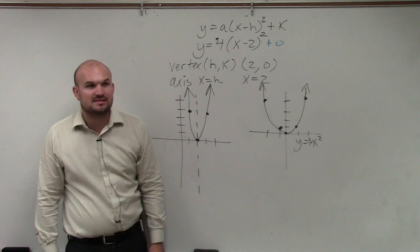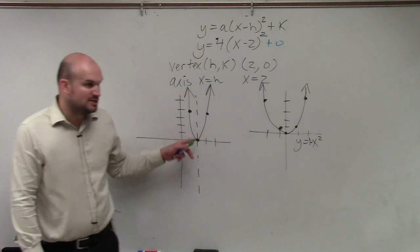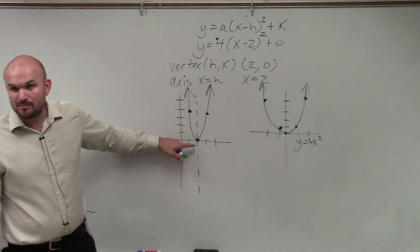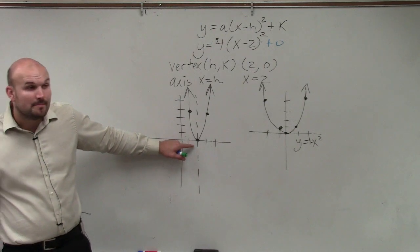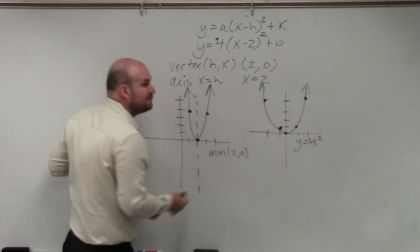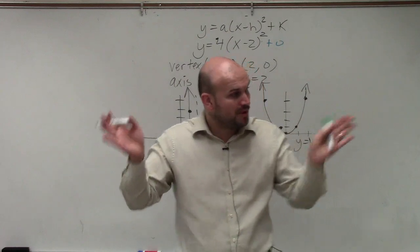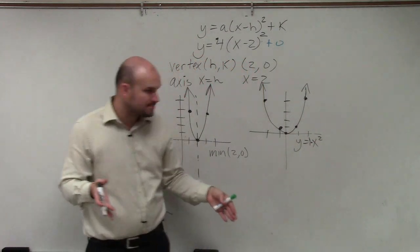So now they're asking for the maximum and domain range, right? Yep. So this vertex, is that a maximum or a minimum point? Minimum point. So you'd say the min is at 2 comma 0. So your vertex is always going to be your maximum or minimum. But if the graph opens up, it's a minimum point. If the graph opens down, it's a maximum point.